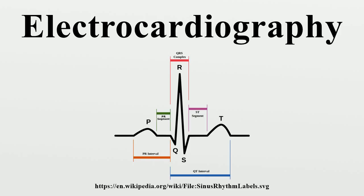Ten electrodes are used for a 12-lead ECG. The electrodes usually consist of a conducting gel embedded in the middle of a self-adhesive pad. The most common type of electrodes for ECG application is silver/silver chloride. The term lead in electrocardiography refers to the 12 different vectors along which the heart's depolarization is measured and recorded.